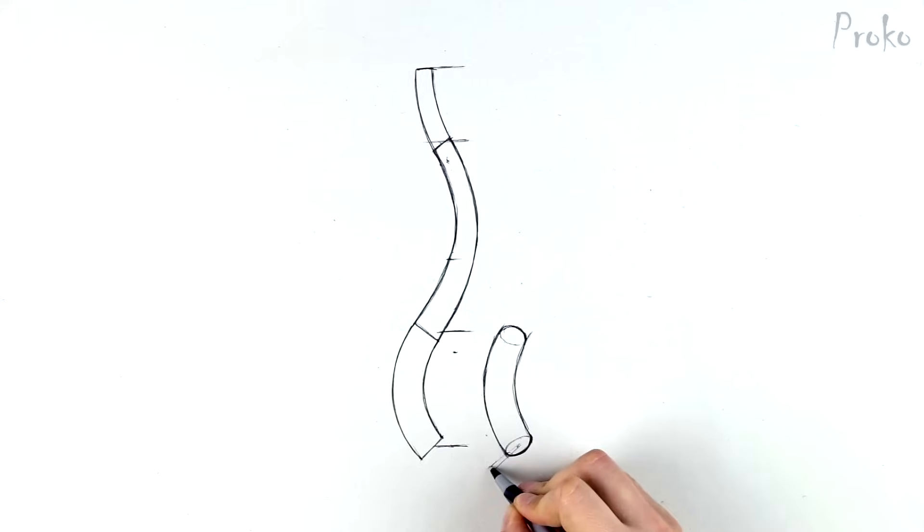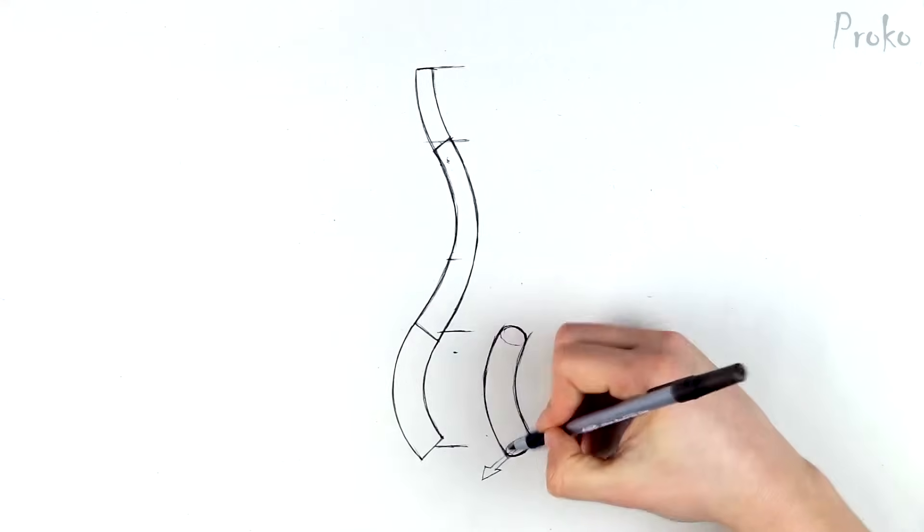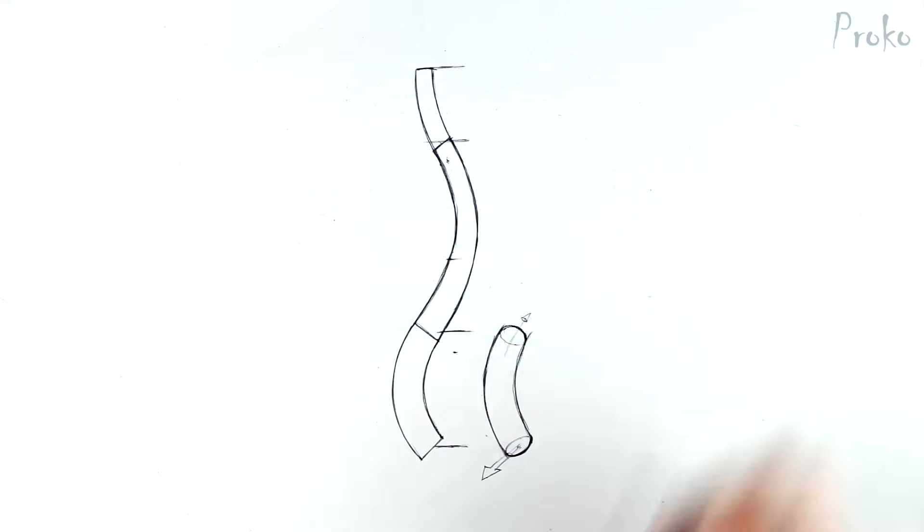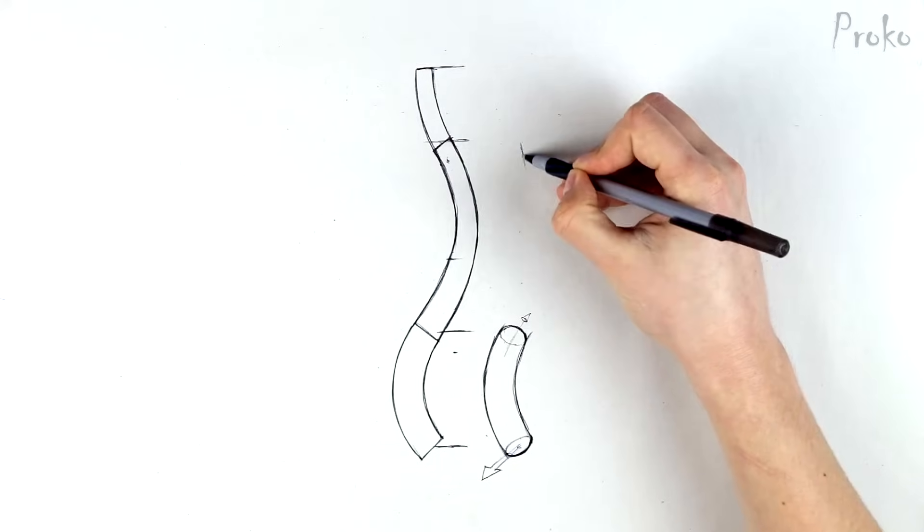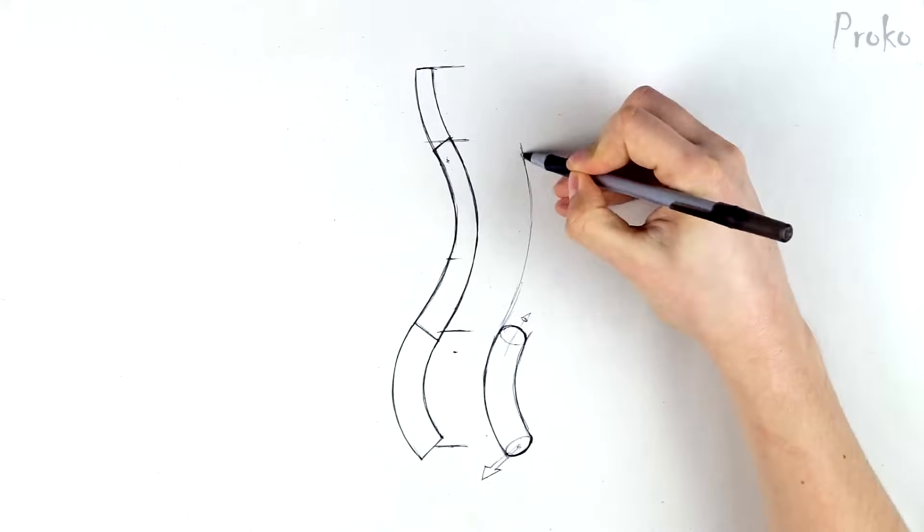There's some basic ellipse perspective for you guys. That should be enough to draw a cylinder in perspective. I'll do the same thing for the thoracic section. It has the backward curve.